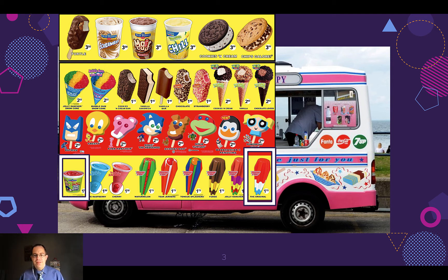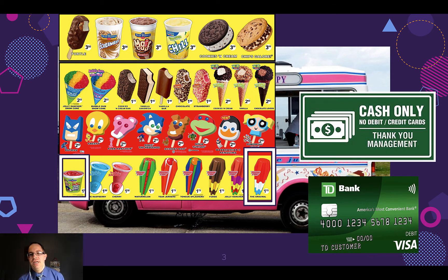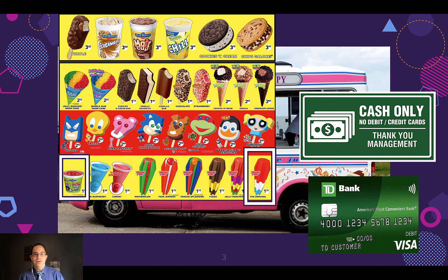The final principle is this: let's say you settle on the firecracker popsicle and go to pay. You pull out your card, hoping to pay with it, and of course the ice cream truck driver says, I only accept cash. This is the final barrier UDL seeks to remove — the assessment barrier. The way that you demonstrate your understanding of the curriculum. Sometimes we tell students they have to write a paper or show knowledge in only one specific way — you can only pay using cash. UDL seeks to remove that and provide a multitude of options in ways you can demonstrate your understanding, or pay for your ice cream.